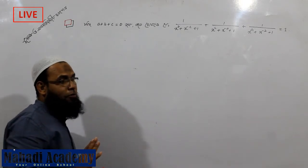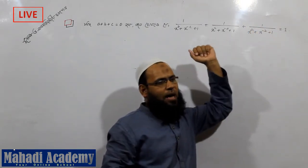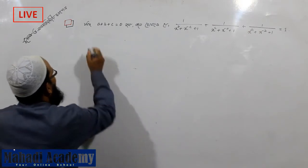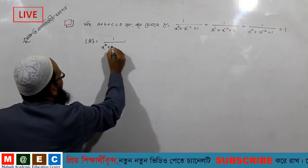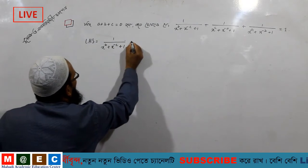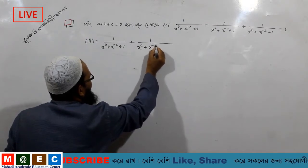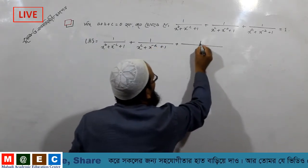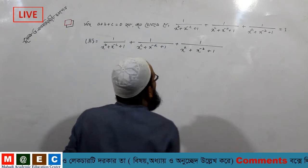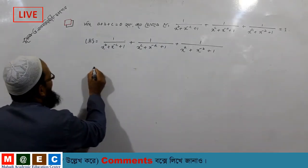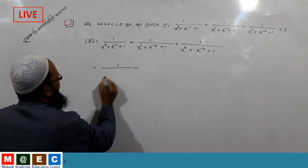We're gonna open the score to 1 minus 0, which will give you 1. So I am going to write left hand side equal to 1 by x to the power b plus x to the power minus c plus 1, plus 1 by x to the power c plus x to the power minus a plus 1, plus 1 by x to the power a